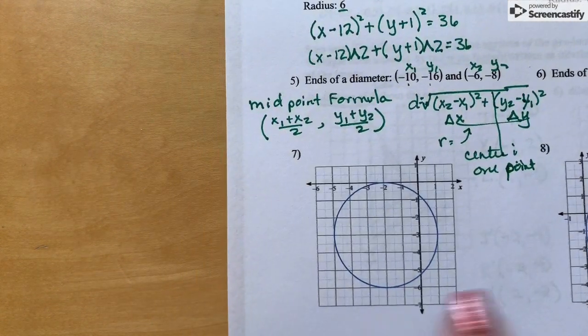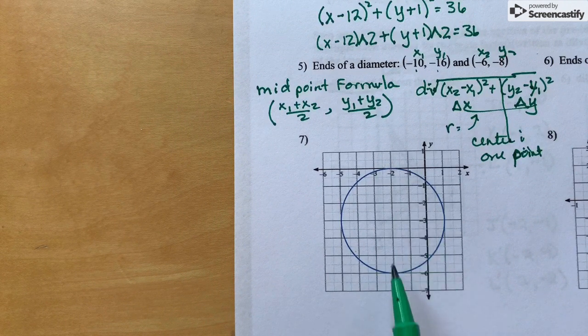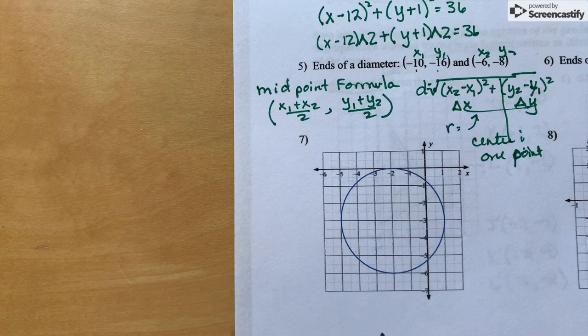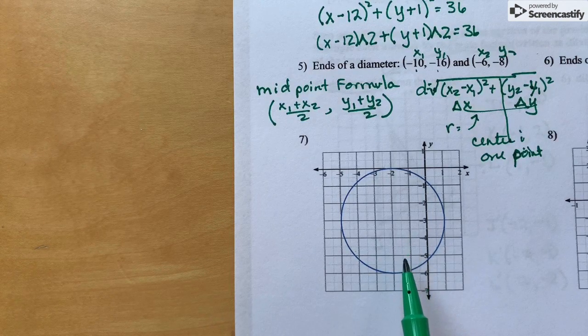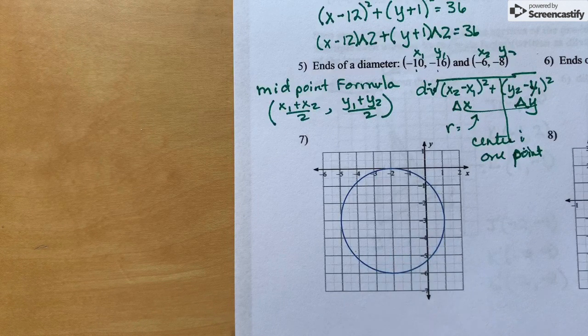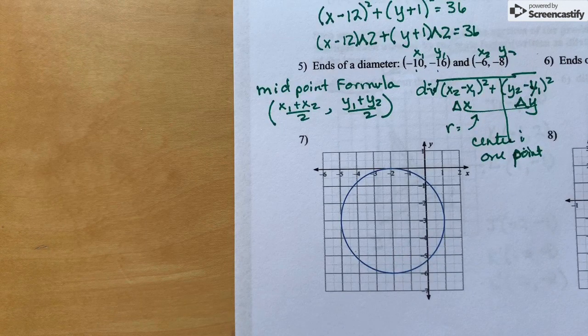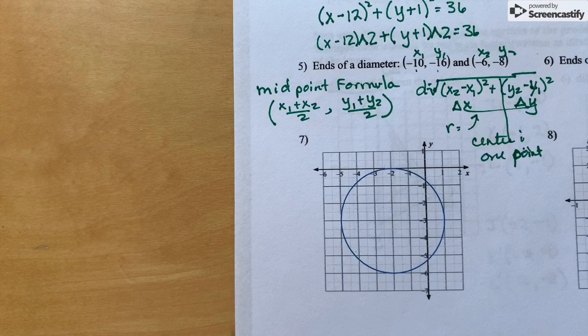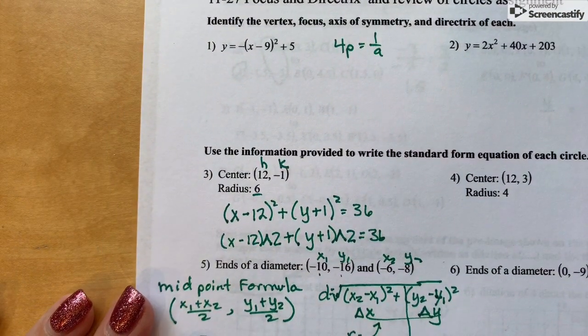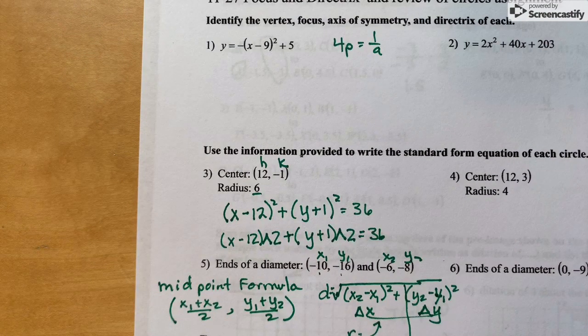So then on number seven and eight, you will just have to visually observe where the center is on the circle. Find the h and k, or the coordinates of your center. And then count the appropriate squares to find the radius out from the center to the edge of the circle. And write your equation from there. All right, group up, help each other out. And have a wonderful Thanksgiving.